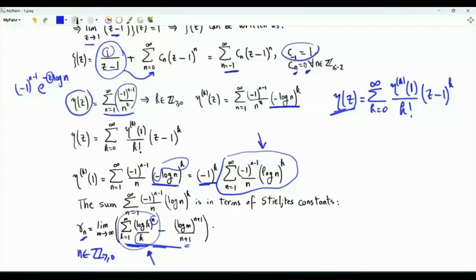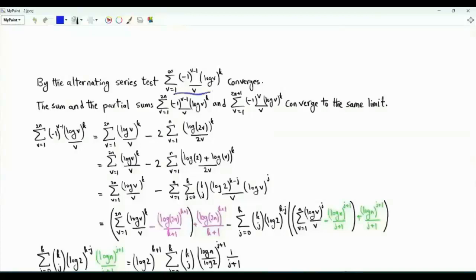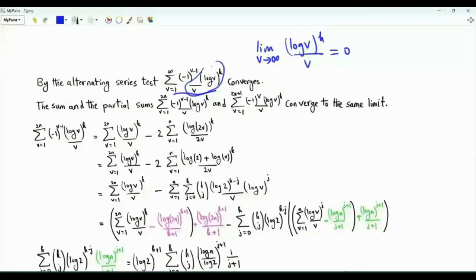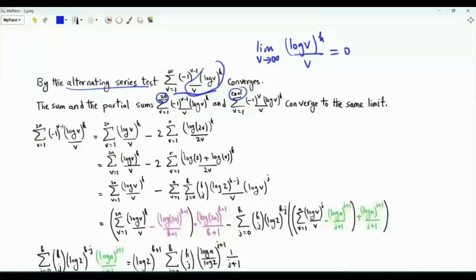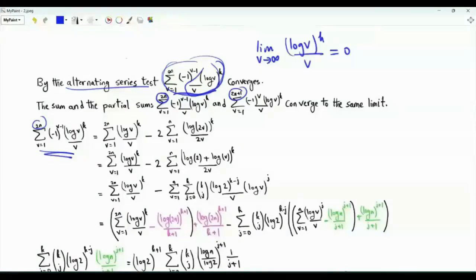The summation we have in our case is very close to the Stieltjes sum, except that our sum of interest has terms with alternating sign. This sum converges: the limit as v tends to infinity of log v to the power k divided by v is 0, and log v to the power k divided by v is eventually decreasing for every non-negative integer k. Because of convergence, the partial sums, whether we stop at 2n (even) or 2n plus 1 (odd), both converge to the same limit. We exploit this by taking an even number of terms and then taking the limit as n tends to infinity.